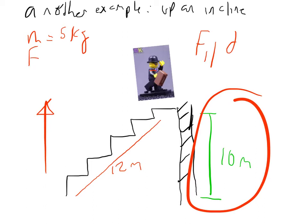So the force is going to be 5 times 9.8. Mass times the acceleration due to gravity equals 49 newtons. The distance is just going to be the vertical component, the up part, 10 meters. So the answer is going to be 490.